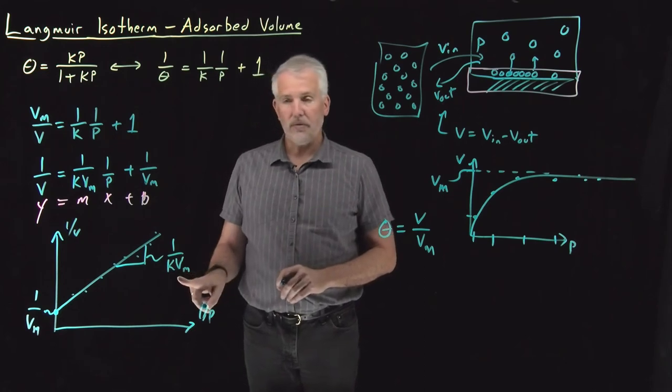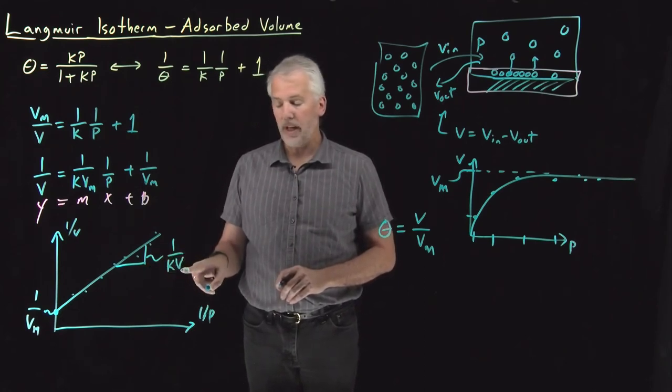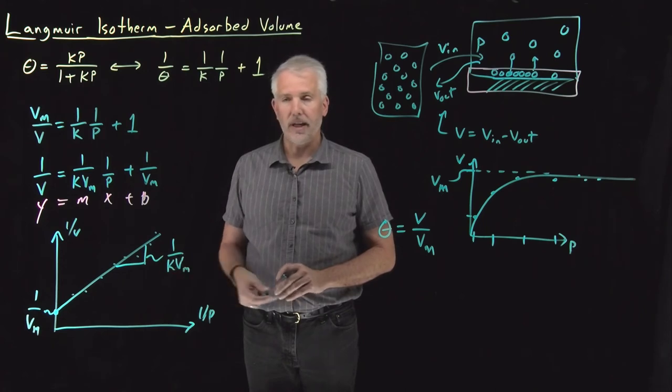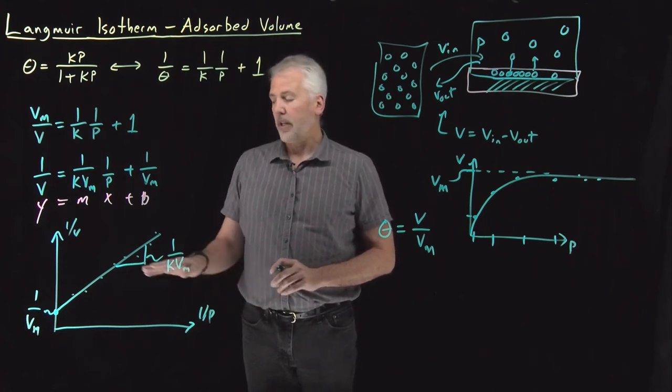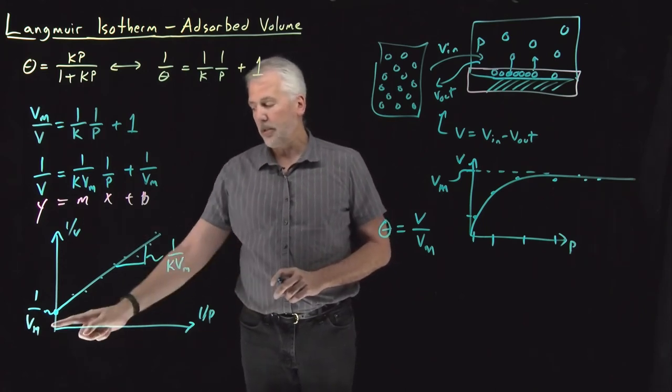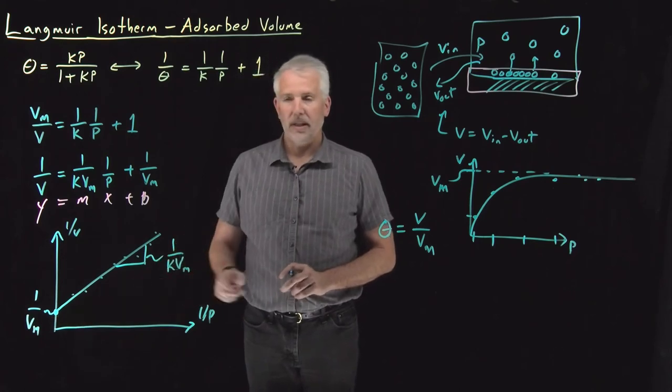So we can solve for the value of Vm from the intercept. Once we know the value of Vm, the slope tells us one over K Vm, so we can obtain the value of K from the slope. So in this form of the linear equation, we're learning something both from the intercept and from the slope.